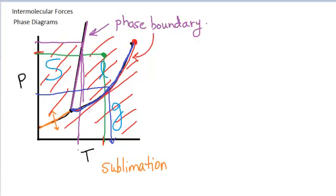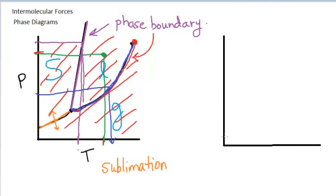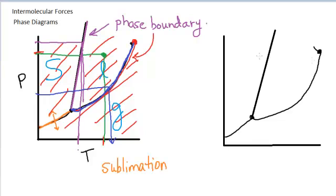This graph represents a pure substance. You can find the phase boundaries or phase transitions based on the lines represented, and you can read pressures and temperatures that correspond to melting points, boiling points, or sublimation points for the given substance. Let me clean it up a bit and we'll talk a little more about it. Essentially, what we have here in this cleaned-up version allows us to talk about some of the other features.